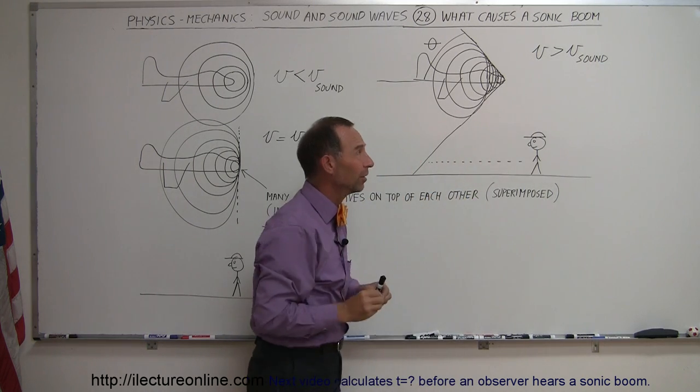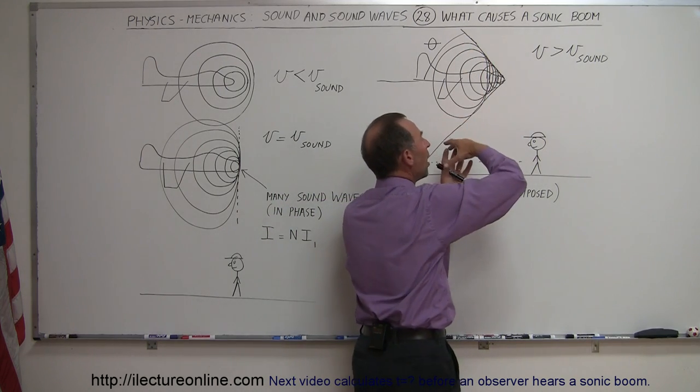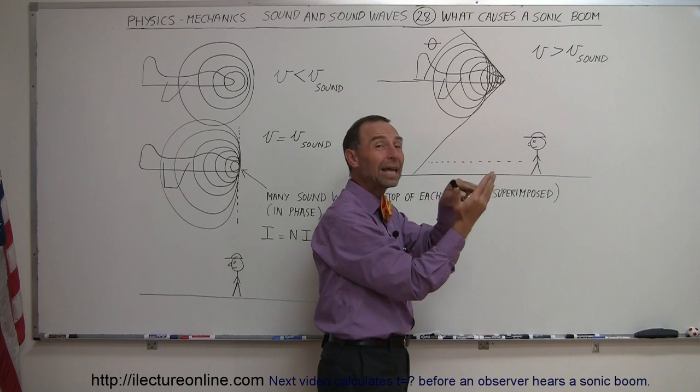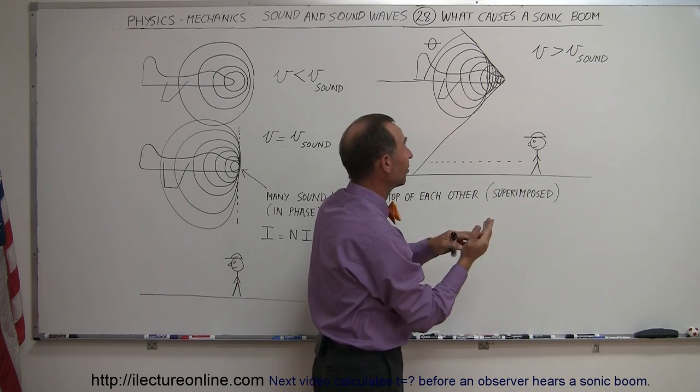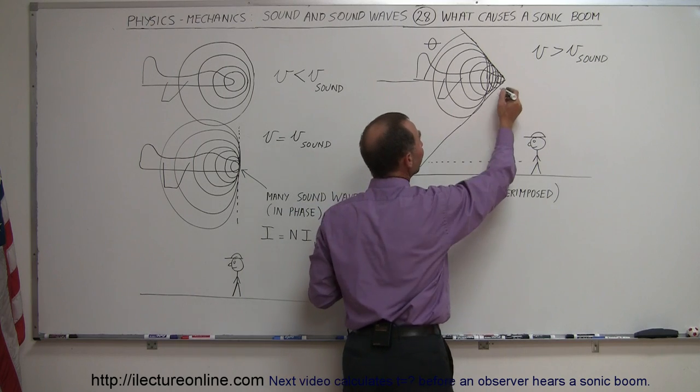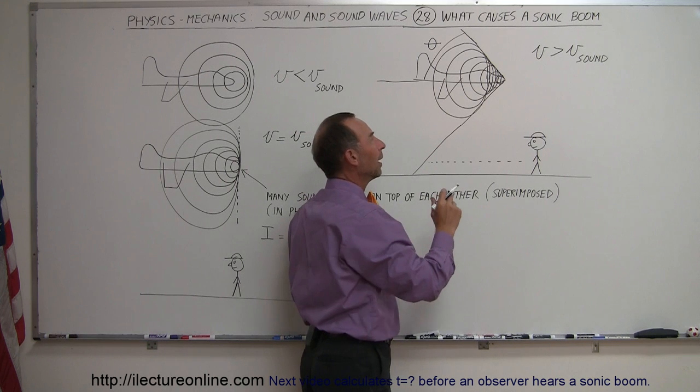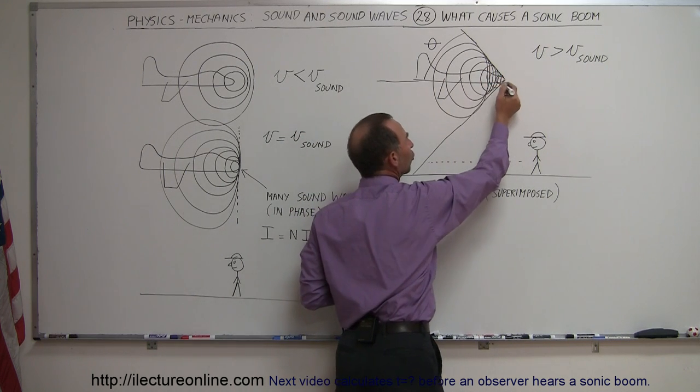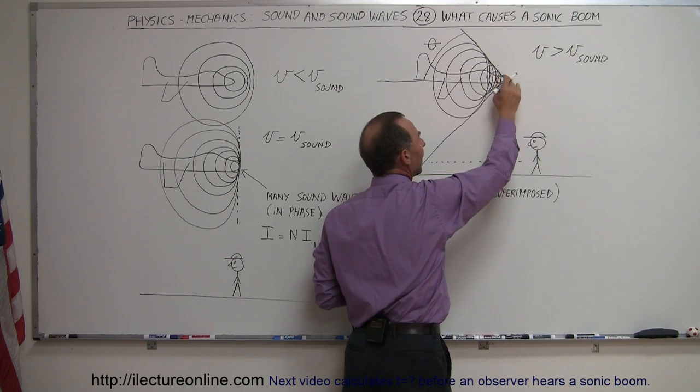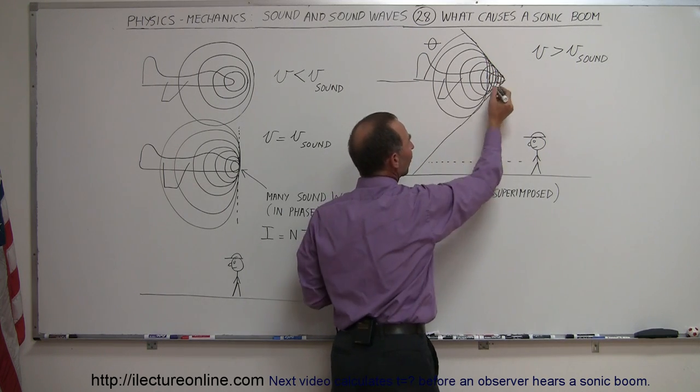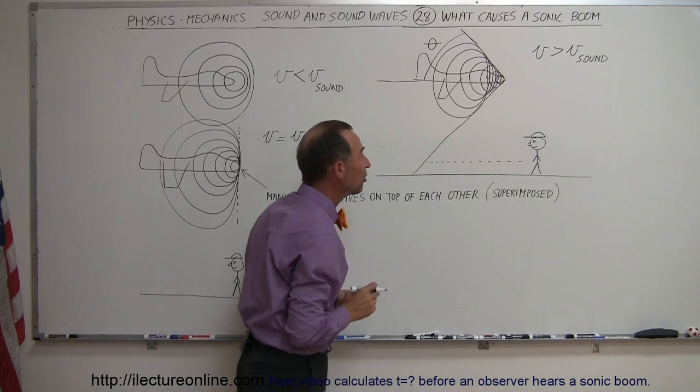So what happens then is, we end up with a spherical cone of sound that's expanding with the plane trying to be ahead of that sound, and actually exceeding, succeeding in being ahead of the sound. But what happens then is that we see this edge of that cone shape expanding sound, we have what we call a superimposition, superimposed waves on top of each other, because the edge of that spherical expansion of sound forms this cone shape region.